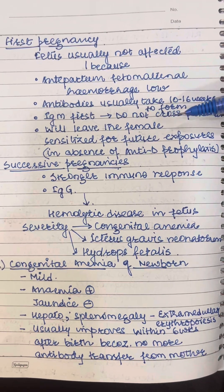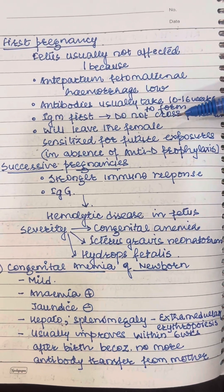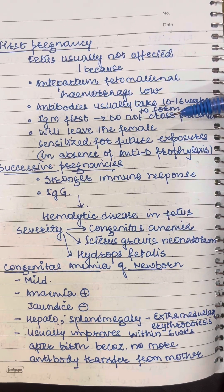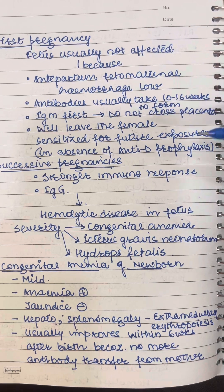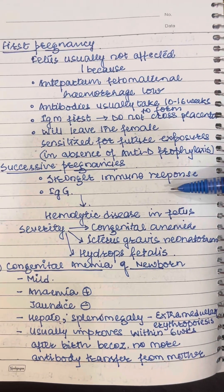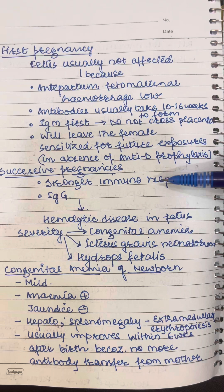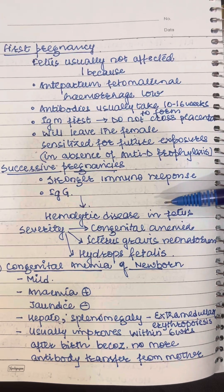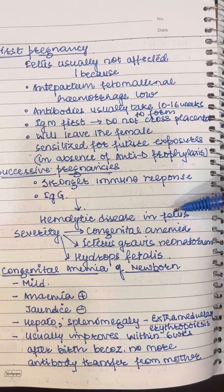In successive pregnancies, again if the same thing happens — an RH positive baby with an RH negative mother — there is a stronger immune response, higher levels of IgG antibodies, and they then cross the placenta and cause hemolytic disease in the fetus.